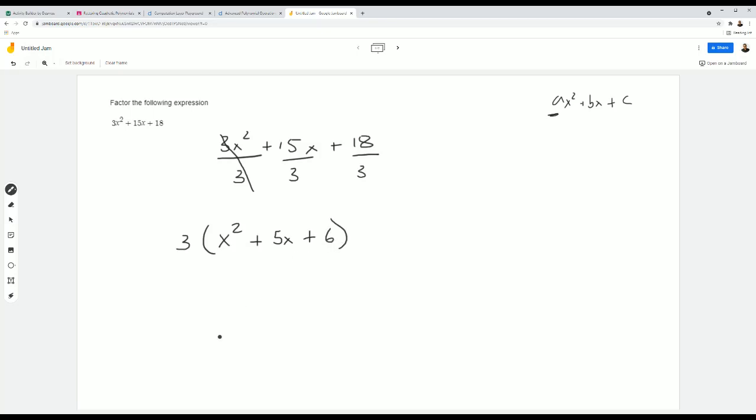Okay, are we done? So whenever we get to a point and you're factoring, you want to ask yourself, is there any more factoring that can be done? So we factored out this 3, but now I see we have a quadratic here, and I want to see if we can factor this even more.